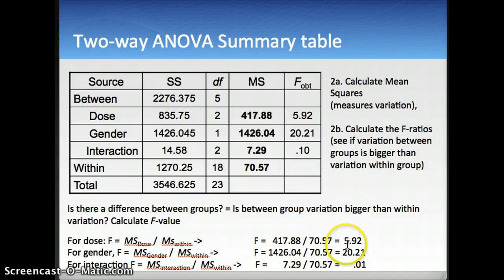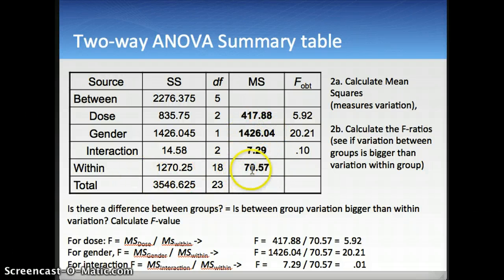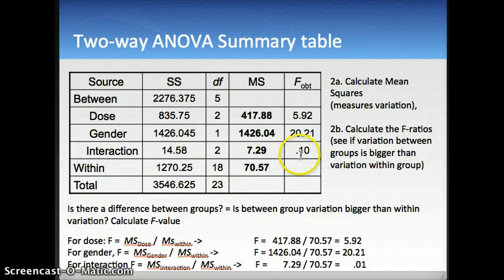For gender, the mean square of 1426 divided by the within mean square of 70 gives an F value of 20. For the interaction, 7 divided by 70 gives an F value of 0.10. These are our observed F values.